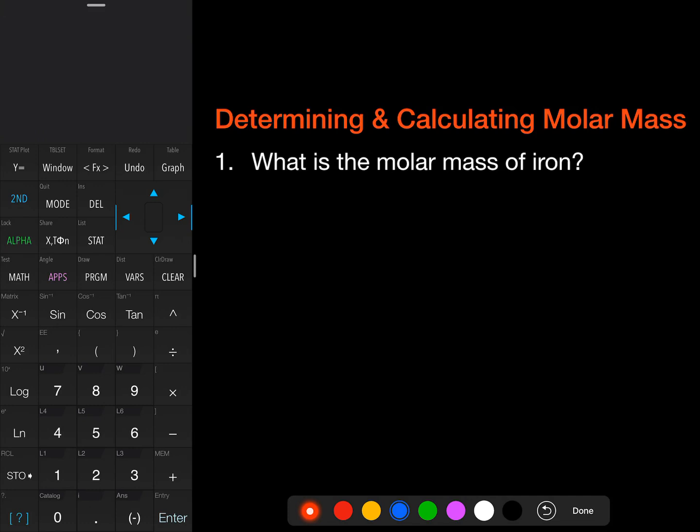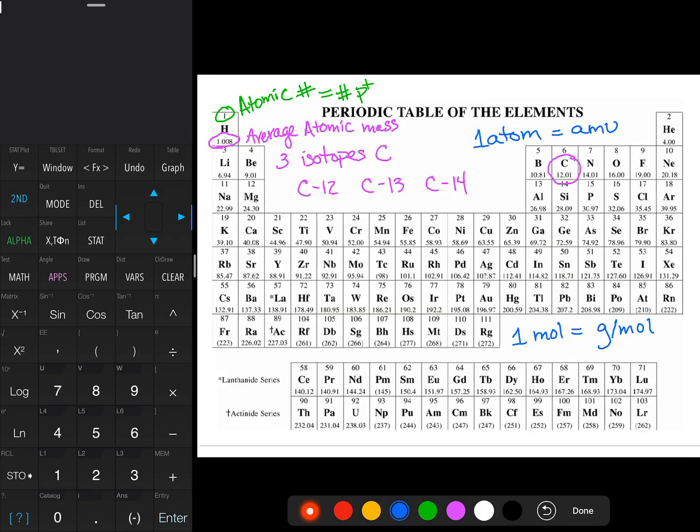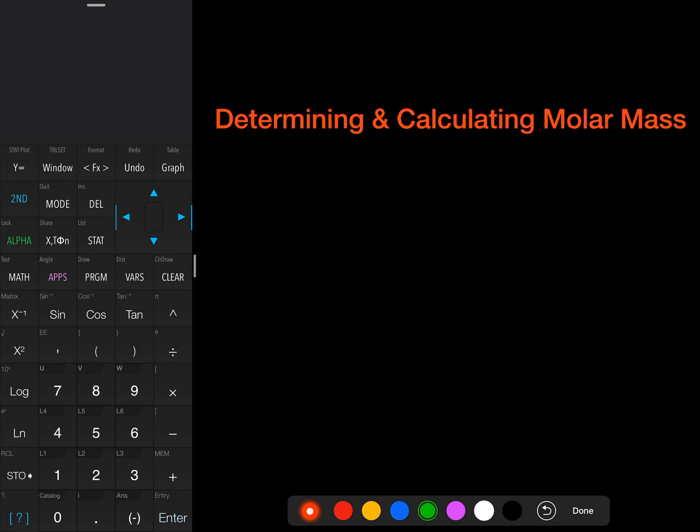What is the molar mass of iron? If I flip back, we're going to take a look at iron here. It's number 26, and it's 55.85. So that means that iron, which is Fe, has a mass of 55.85 grams per mole. That's the molar mass. If we were talking about just one atom of iron, then it would be an AMU.